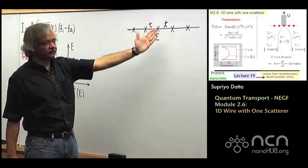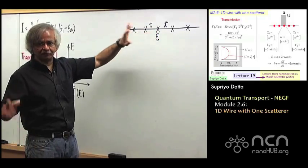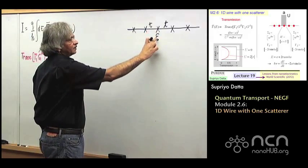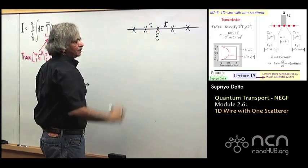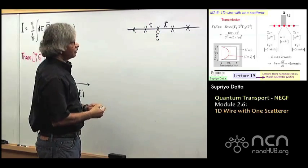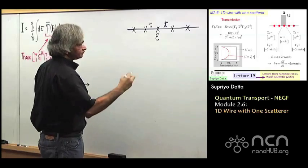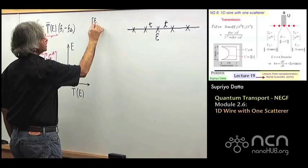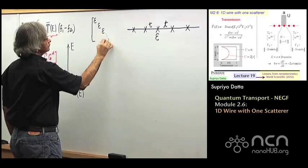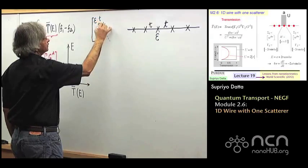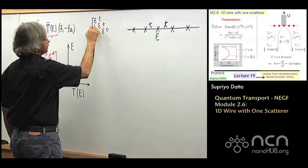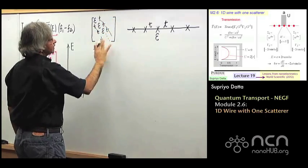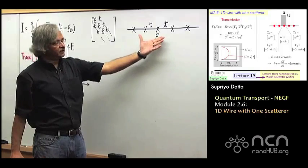For a one-dimensional conductor, we are using the simplest Hamiltonian from week 1, where basically the diagonal elements are epsilon and the connection to the nearest neighbors is T. If I write down H, it would have epsilon's down the diagonal and T's on the upper and lower diagonals. That's the H we need to describe this Hamiltonian.